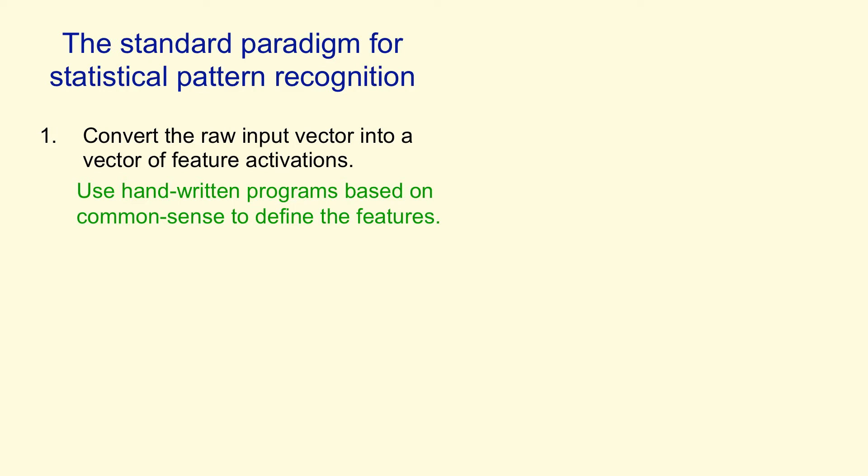We look at the problem, we decide what the good features should be, we try out some features, we see if they work. If they don't work we try some more features. And eventually we get a set of features that allow us to solve the problem by using a subsequent learning stage.